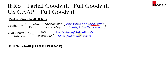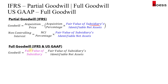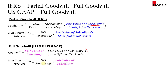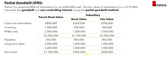Under the full goodwill method, goodwill is based on the fair value of the whole subsidiary — 100% of it — minus 100% of the fair value of the subsidiary's identifiable net assets. For the NCI portion, you again take the NCI percentage, but this time multiply it by the fair value of the subsidiary, not the identifiable net assets. That's the one important difference between the two methods.